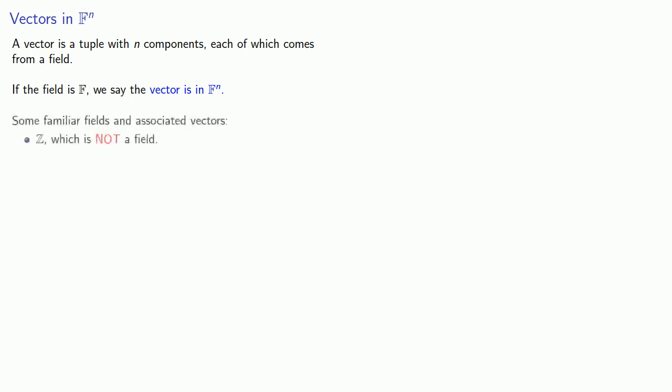And with this in mind, we can now define vectors. A vector is a tuple with n components, each of which comes from a field. If the field is F, we say the vector is in F^n. So some of the familiar fields and the associated vectors: first of all, Z, the set of integers, is not a field. So we don't really have vectors in Z.